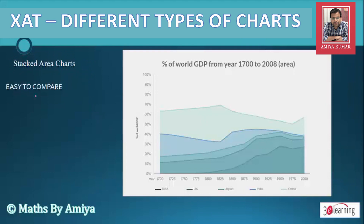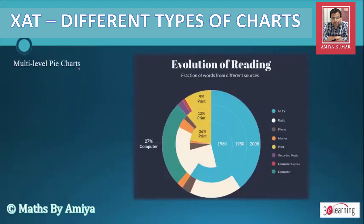Next is the SCAT Area Chart — easy to compare. Then the Multi-level Pie Chart. We have seen the standard pie chart, but this has multiple levels, helping us get all data in a single pie chart. You may have seen one, two, or three separate pie charts — they might give a multi-level pie chart instead. Use the same method for solving it, and if you find this in your examination, please don't be surprised.